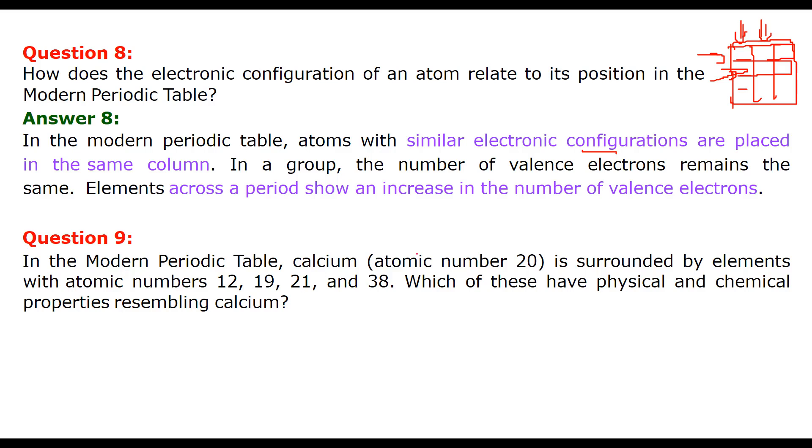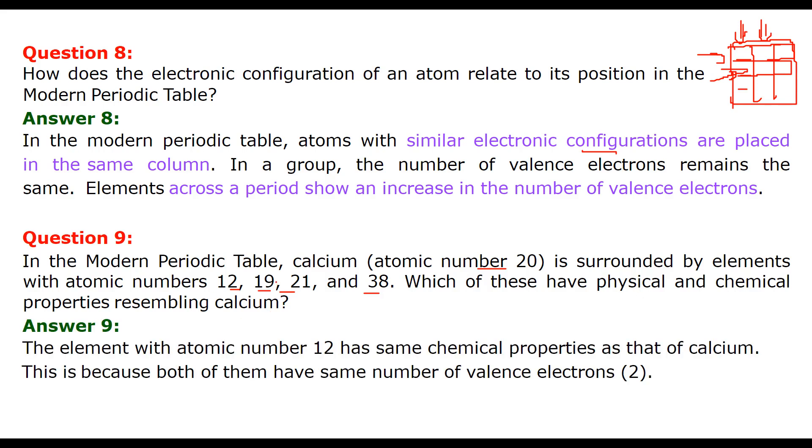In a modern periodic table, calcium, which is having atomic number 20, surrounded by elements with atomic number 12, 19, 21, and 38. Which of these have physical and chemical properties resembling calcium? The answer is 12. Why? Because this shows same chemical properties as calcium. Why? Both of them have same number of valence electrons, 2. This gives you 2,8,8,2. Here we have 12, so 2,8,2. The number of valence electrons are same. That is, they are showing the same or they tend to show the same chemical properties.